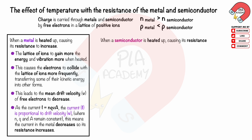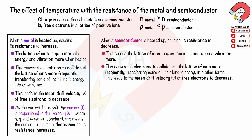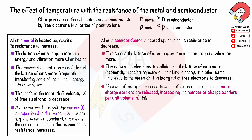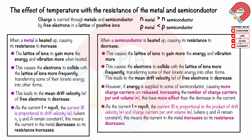When a semiconductor is heated up, its resistance decreases. The lattice of ions gains more energy and vibrates more, causing electrons to collide with the lattice of ions more frequently and transferring kinetic energy into other forms, leading to the mean drift velocity V of free electrons decreasing. However, if energy is supplied to the semiconductor, more charge carriers are released, increasing the number of charge carriers per unit volume N. This has more effect than the decrease in drift velocity. As current I equals NQVA, where current I is proportional to the product of drift velocity V and charge carriers per unit volume N, the current in the semiconductor increases so its resistance decreases.